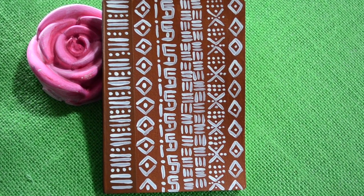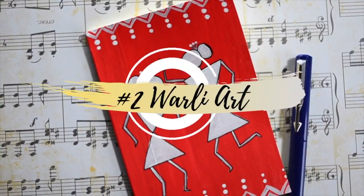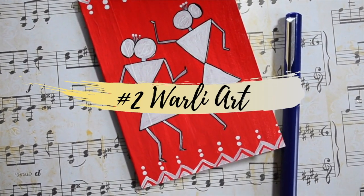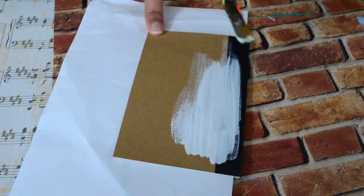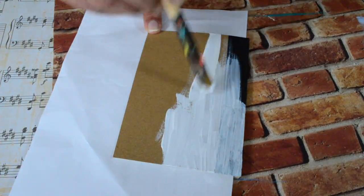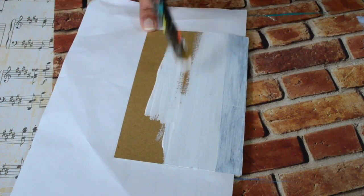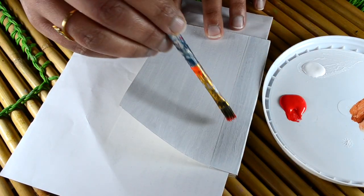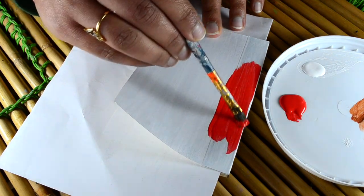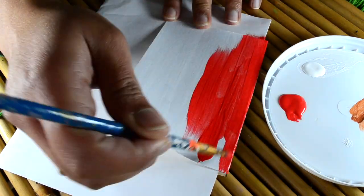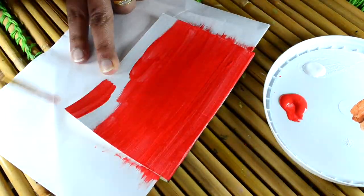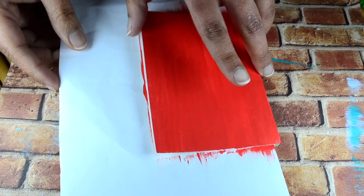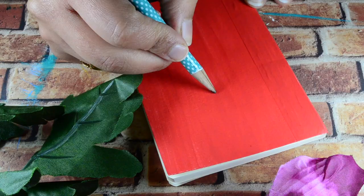For my second notebook cover, I'm painting white acrylic paint on the notebook cover to give it a light base so that when I do red paint, it will pop nicely. I'm doing two coats of white acrylic paint to make it more opaque, and then I'll be doing red acrylic paint on top of white when it has dried. Then I'll let my red paint also dry completely.